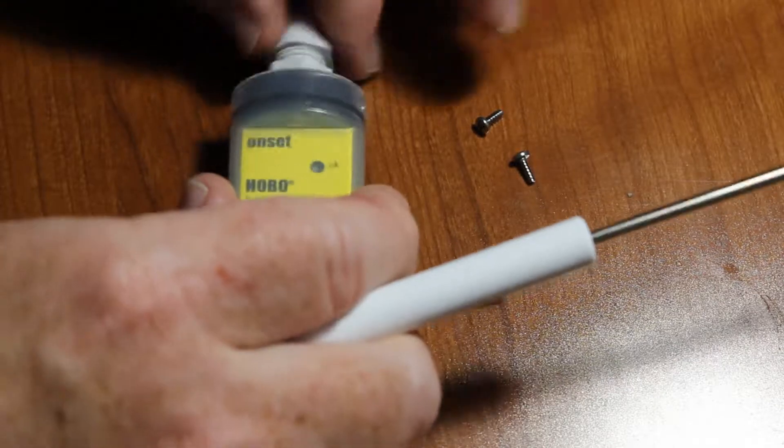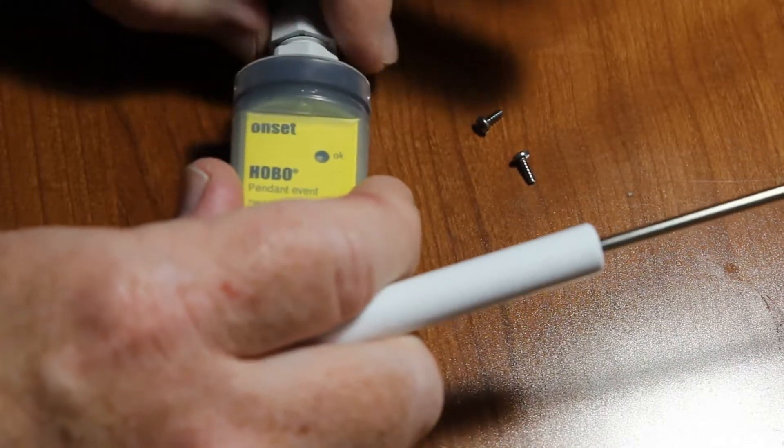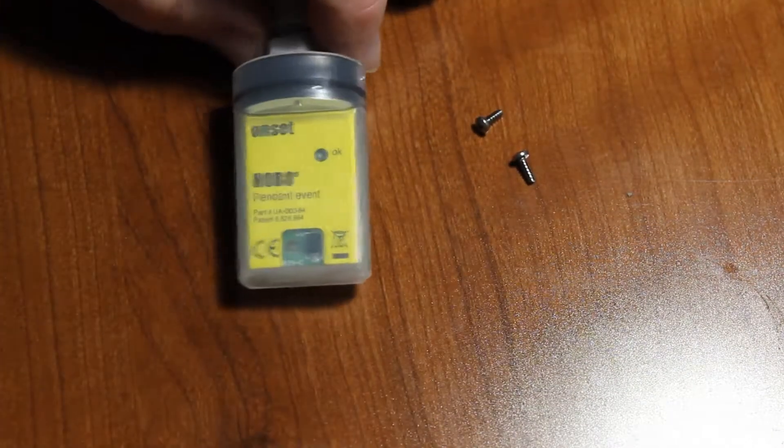And put the screws back in, and then tighten down this grommet nice and tight on that cable. You can just use your fingers. That will be tight enough.